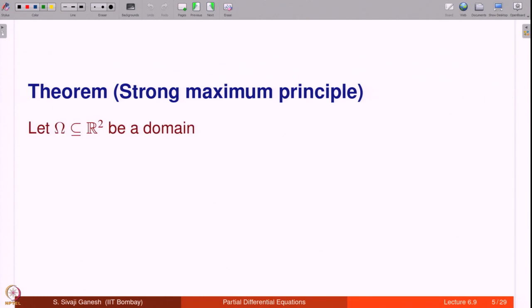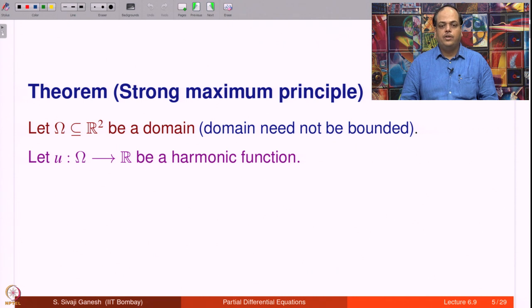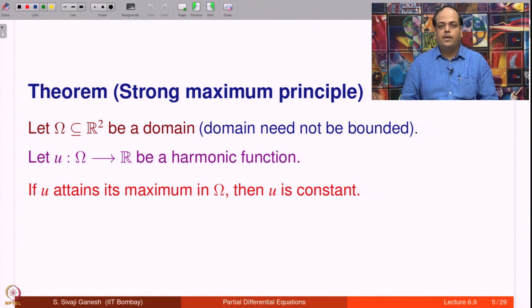Let us state the strong maximum principle as a theorem. Let omega in R² be a domain — the domain need not be bounded. Let u from omega to R be a harmonic function. If u attains its maximum in omega, then u is constant. Notice that in the hypothesis we are not assuming omega is bounded. Therefore, even if you have a continuous function on the closure, the maximum may not make sense. What the strong maximum principle says is: if there is a maximum and it is attained in omega, then the harmonic function must be constant.